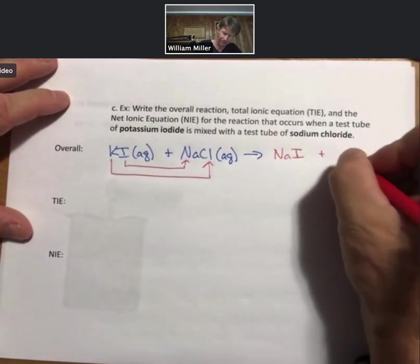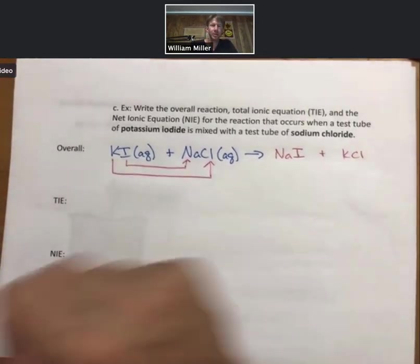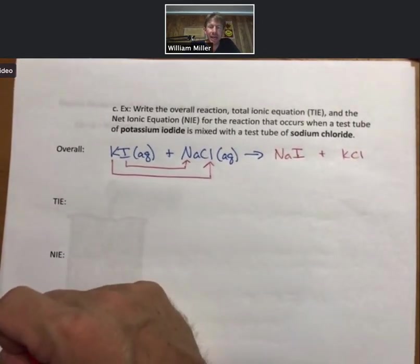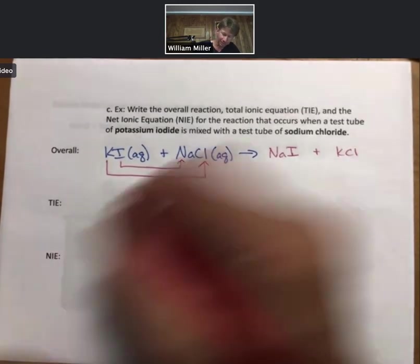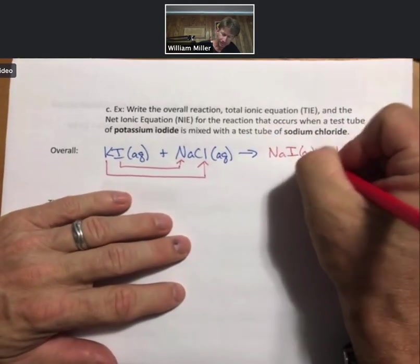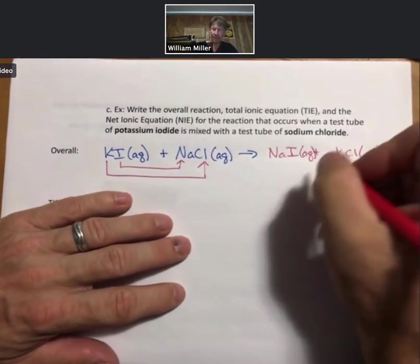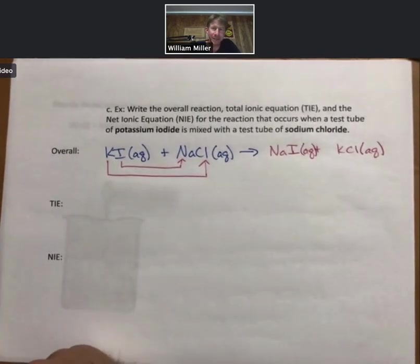Leave some space. Now, if you go to your solubility rules, anything with sodium is going to be soluble. Anything with chloride is, or sorry, almost anything with chloride, but anything with potassium is also soluble. Both of those are aqueous species.